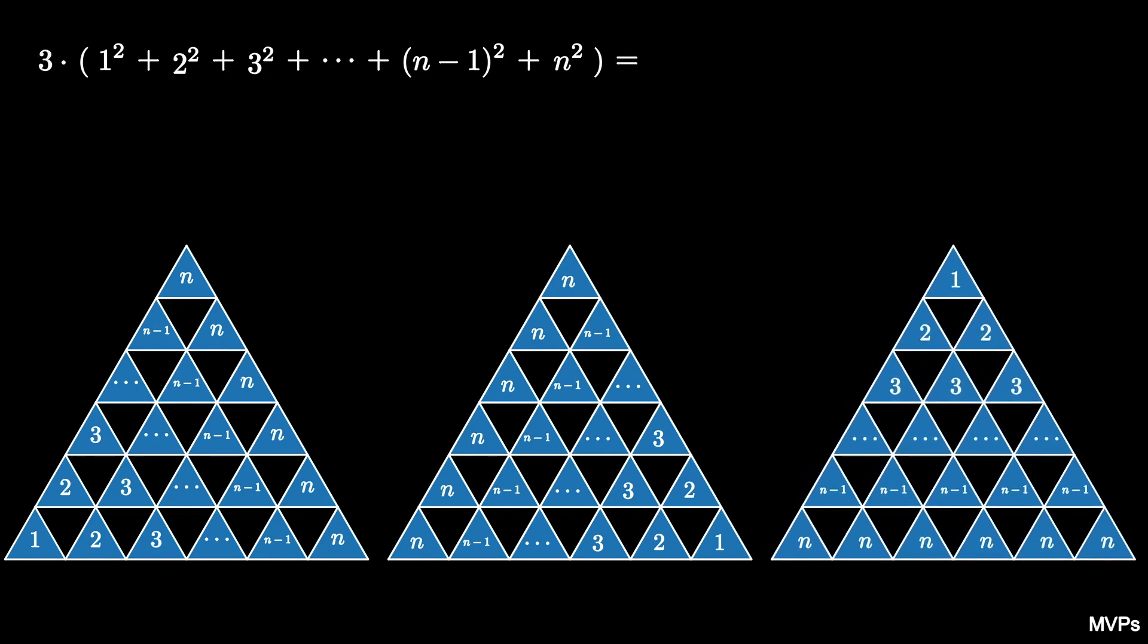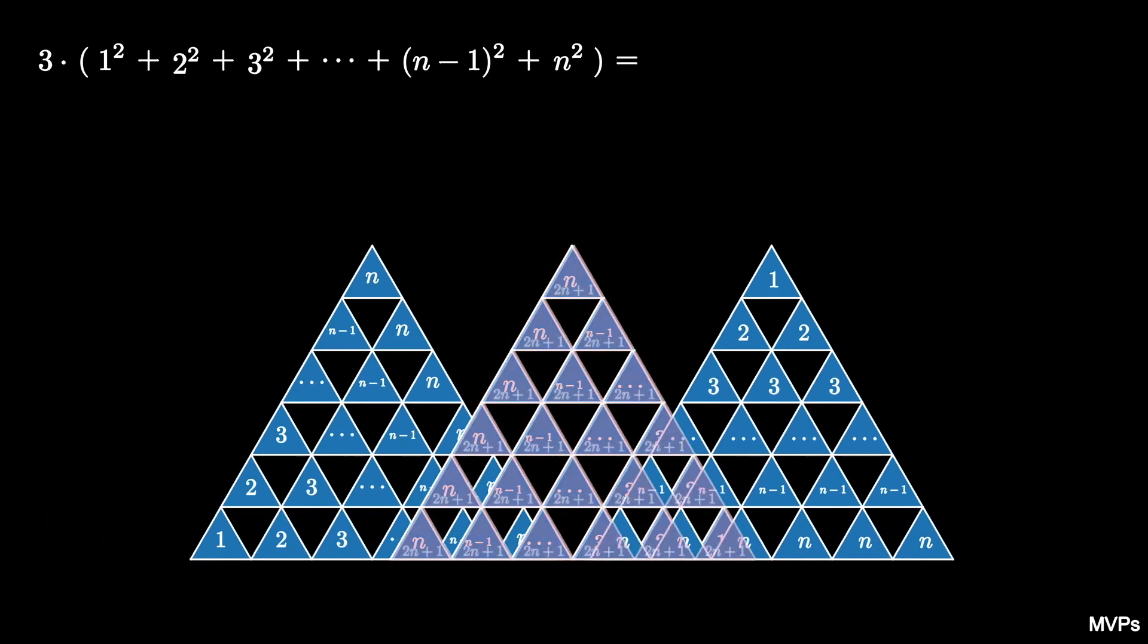Notice that at any position, if you add the number of tokens at that position over the three copies, you always get 2n plus 1.